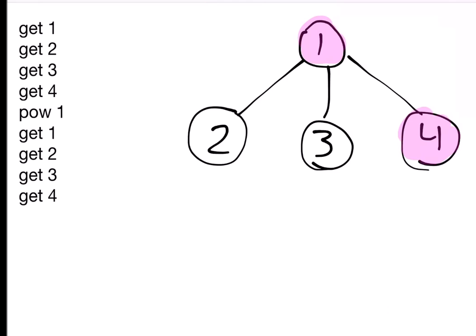The second type of query is GET and then a number X. In this type of query, you're supposed to count the rooms in the subtree of X that are currently lit up. For example, in GET 1 you would count nodes 1, 2, 3, 4, and only 2 of them are lit up, so the answer is 2. Whereas in GET 4, the answer is going to be 1.